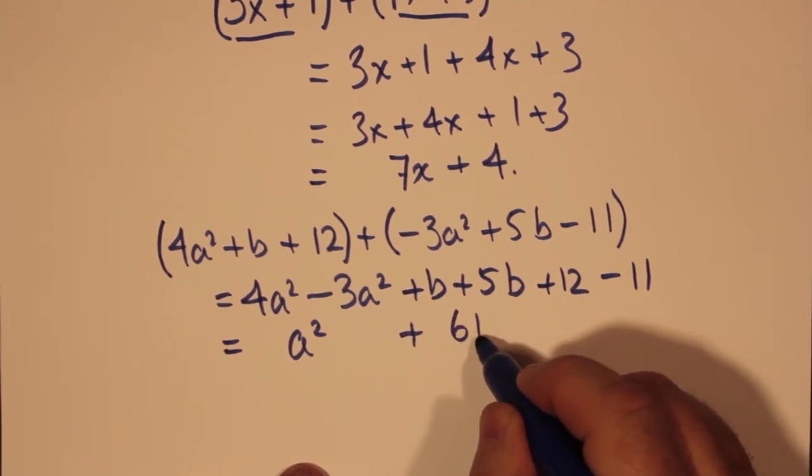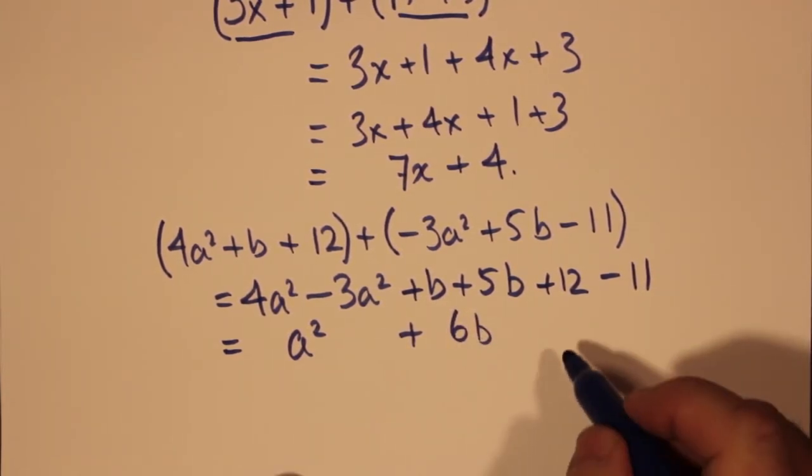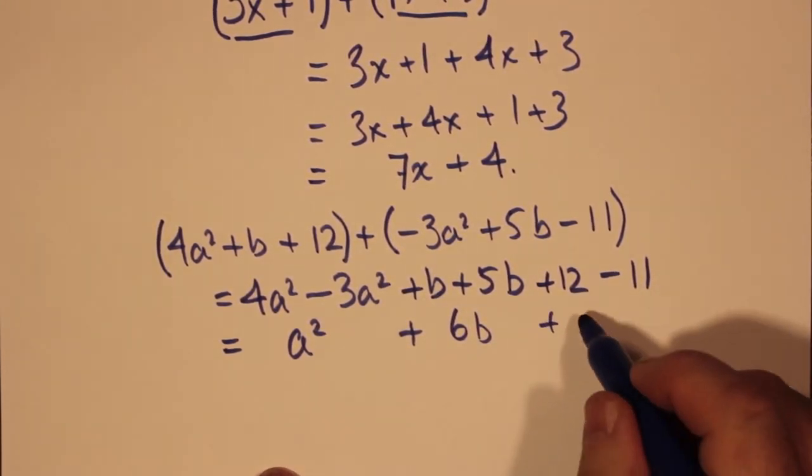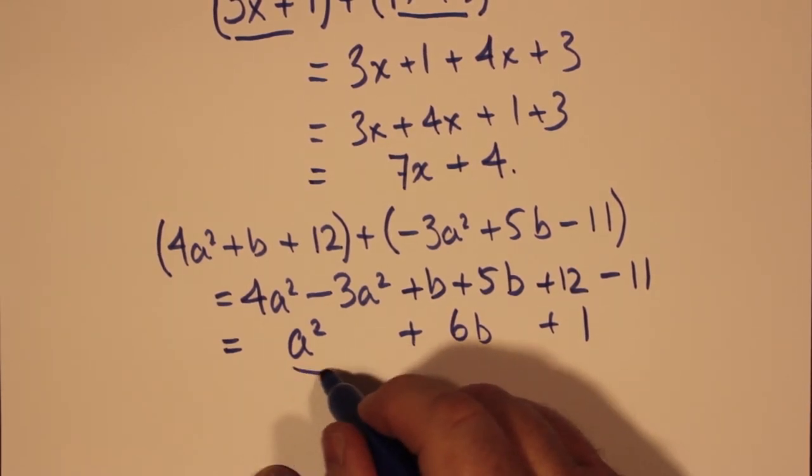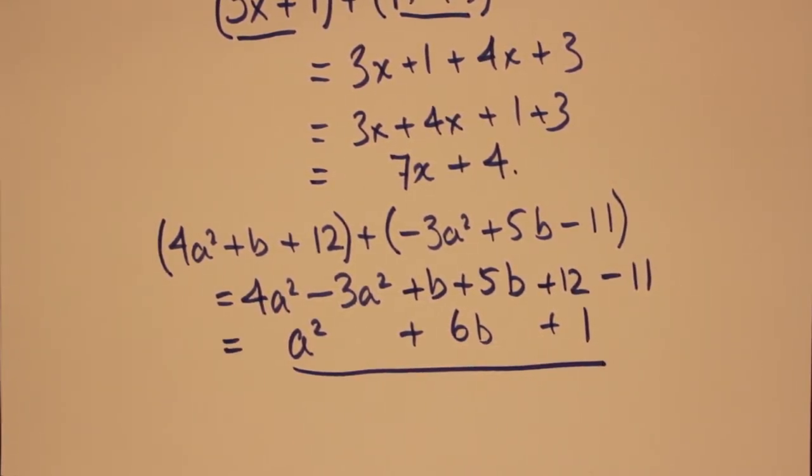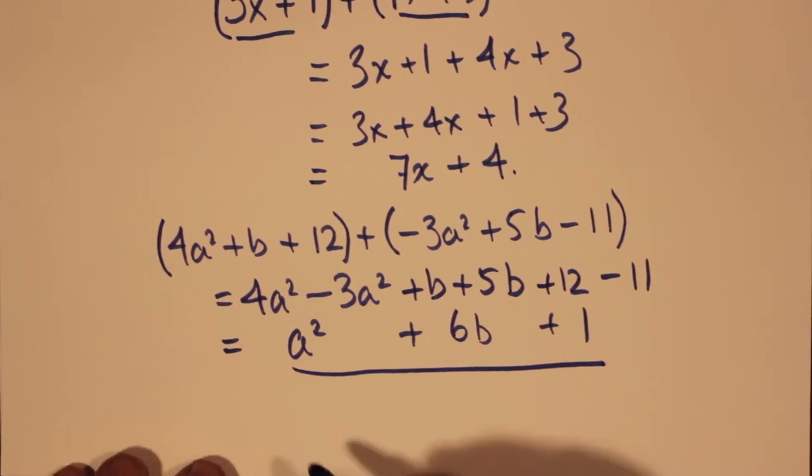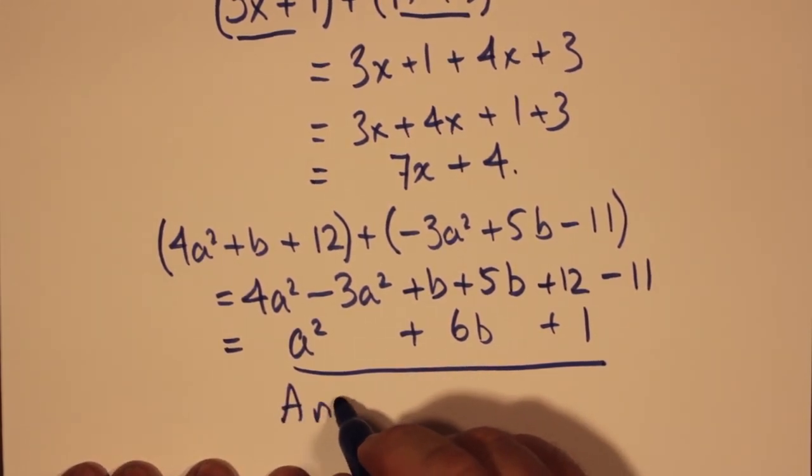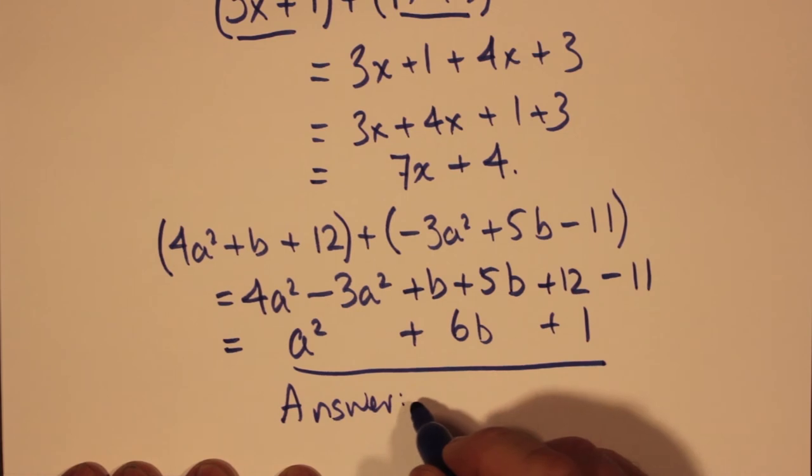we find that 4a squared minus 3a squared is just a squared, plus b plus 5b makes plus 6b. So we have a squared plus 6b. And 12 minus 11 makes 1. So we have a squared plus 6b plus 1.